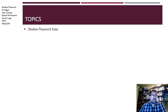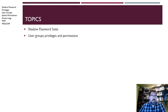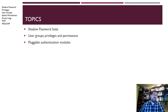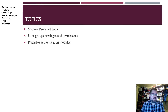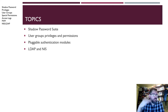Our topics this week: we're going to talk about the Shadow Password Suite, which is traditional Unix authentication. Then we're going to talk about user groups, privileges, and permissions — this should be a review from your other Linux classes. We'll also talk about Pluggable Authentication Modules, or PAM, which is the standard authentication mechanism in most modern Linux distros. No one really uses just the password and shadow files anymore; PAM is usually doing that authentication for us.